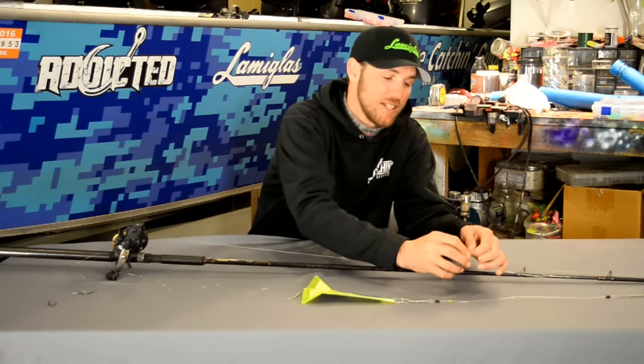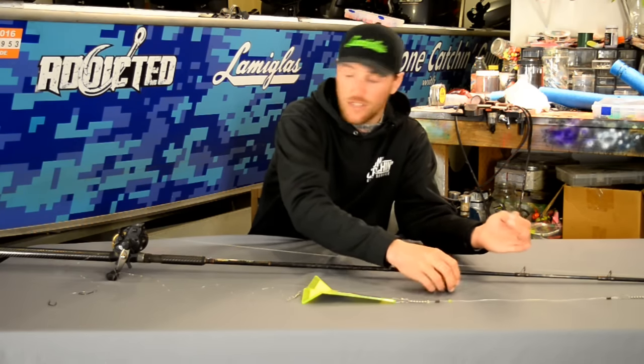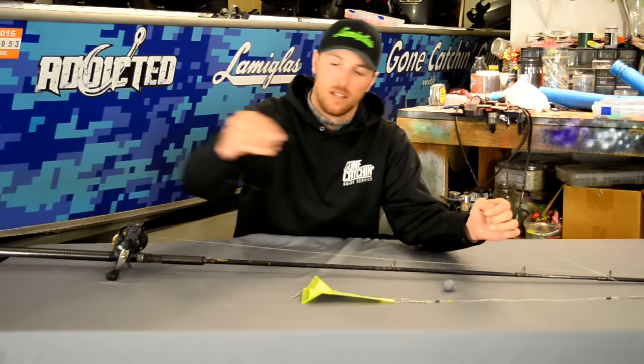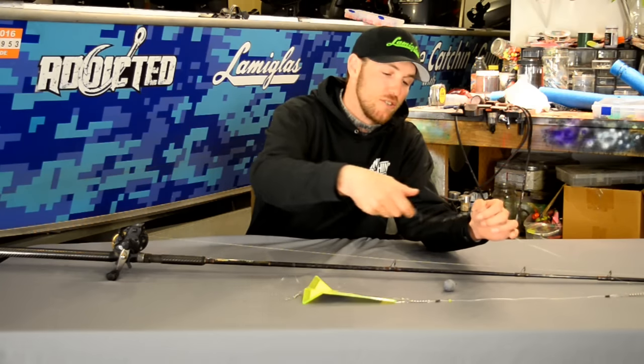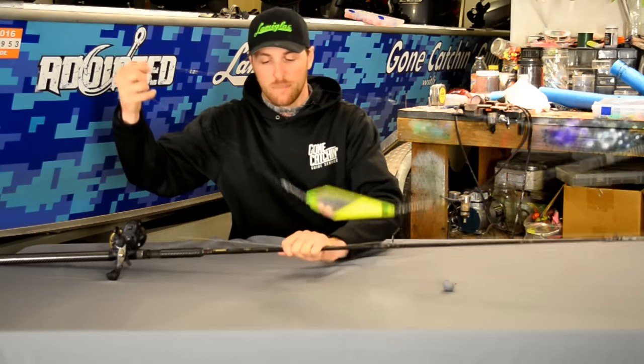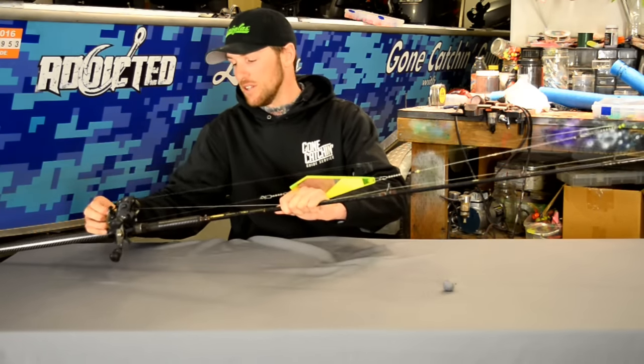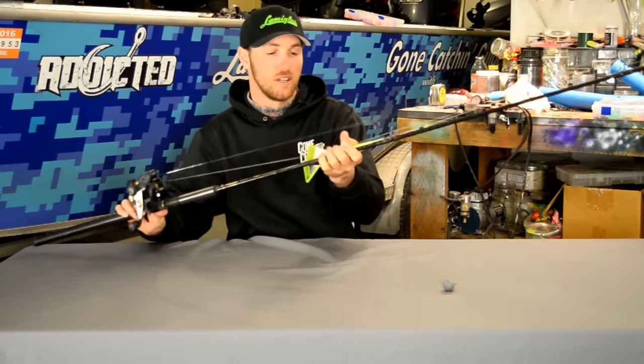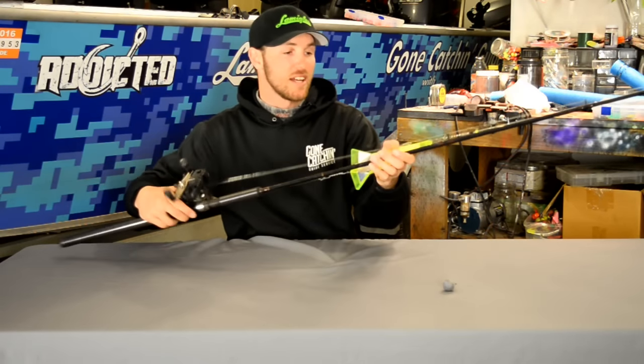Another cool little trick is by taking off your lead and leaving those duo snaps attached there. You can take your hook, just use that as a holder, and you can wrap this whole setup right around your reel for storage in the boat. And it keeps everything nice and in line.